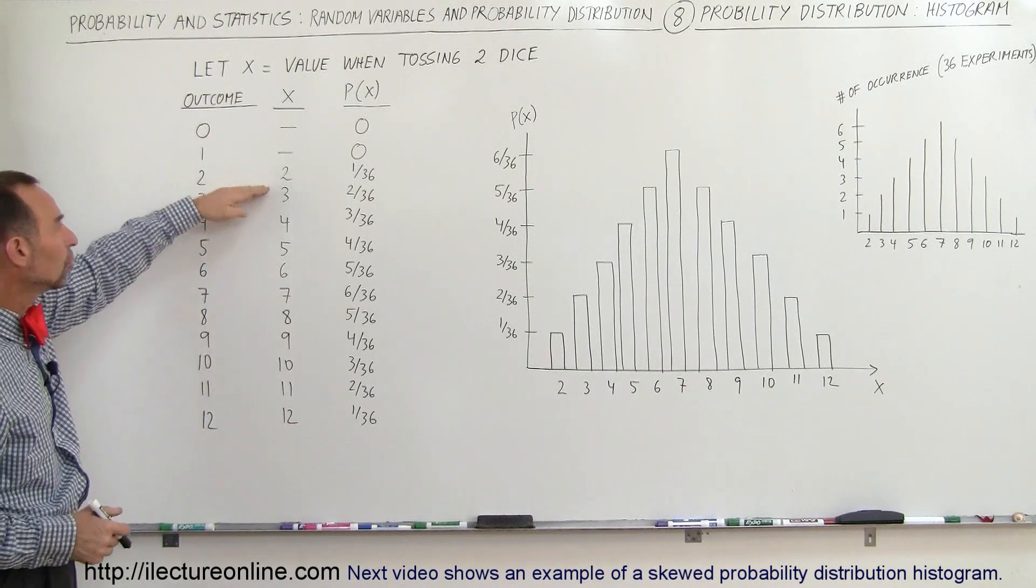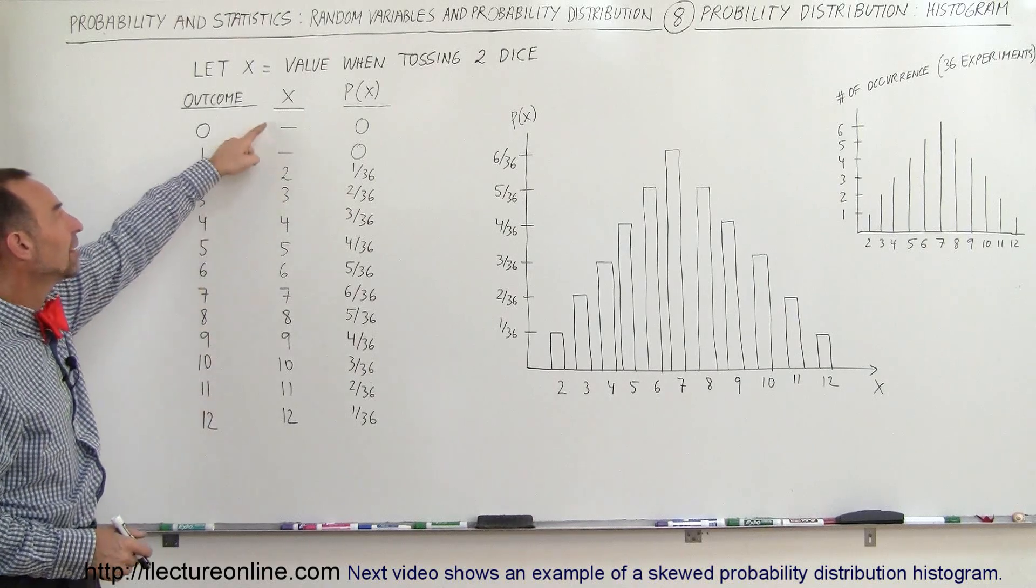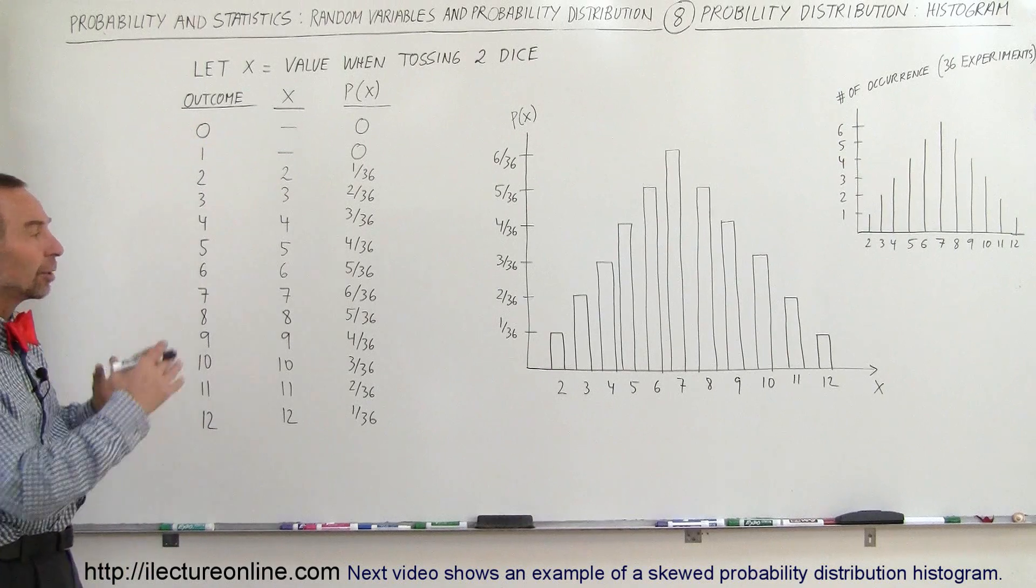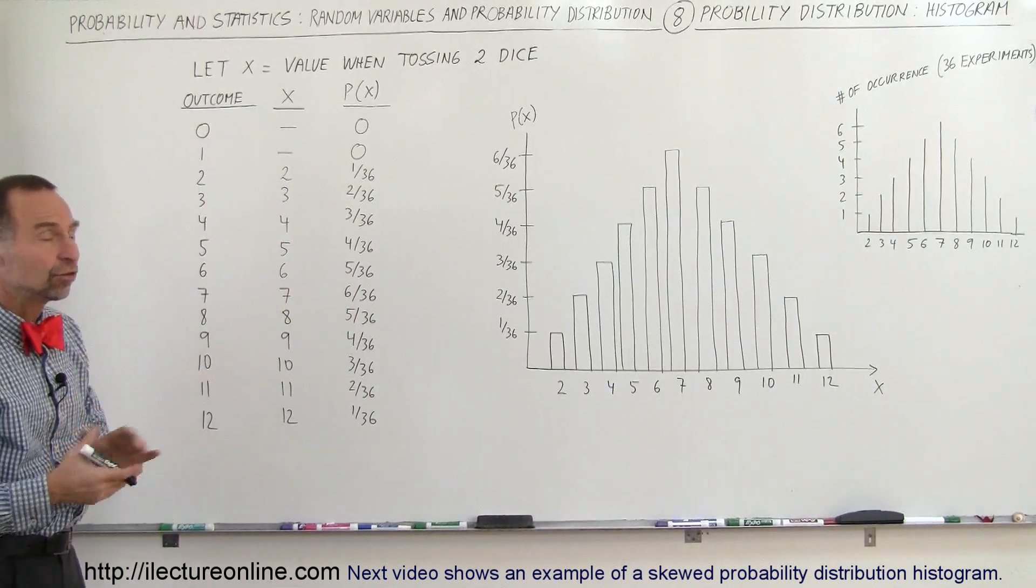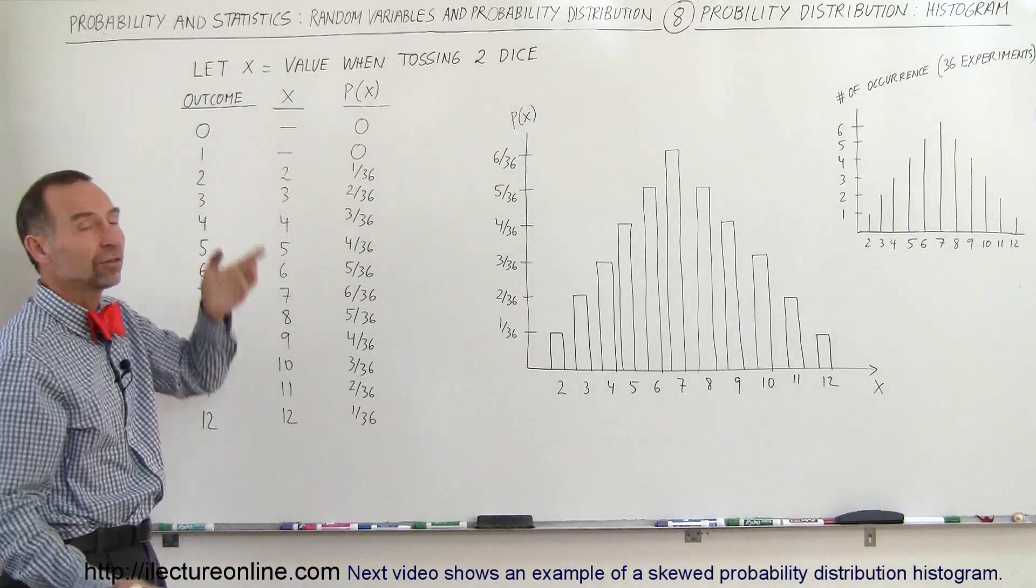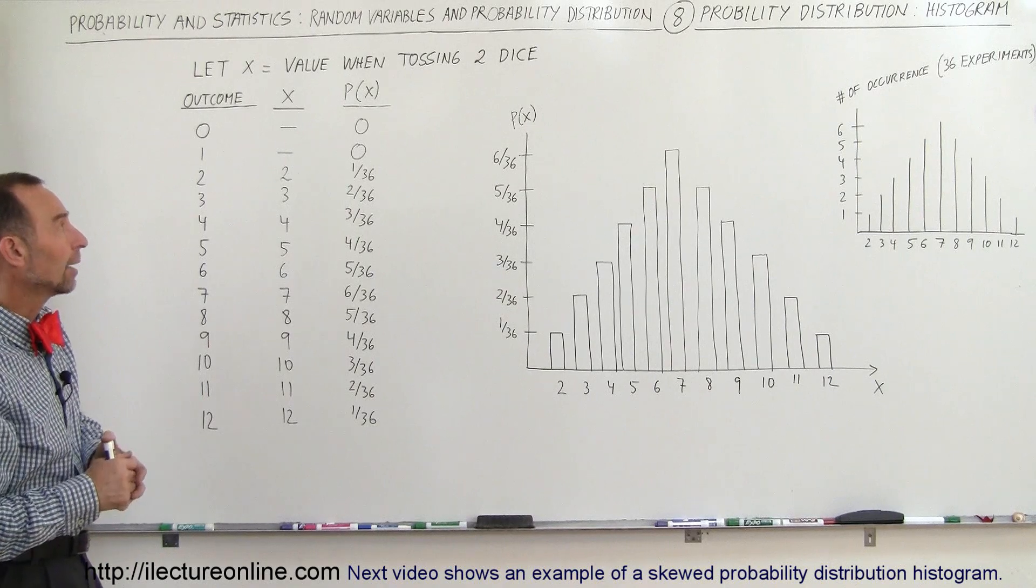So X can be 2, 3, 4, 5, 6, 7, 8, 9, 10, 11, 12. It cannot be 0 or 1, so we just exclude those as possibilities, even though you may include that in your distribution. X cannot take on those two values, so definitely the probability of those two values is 0, because there's no way you can get 0 or 1 with two dice.